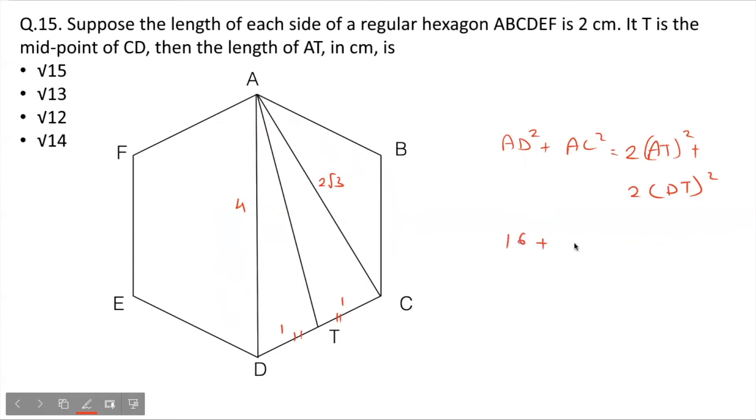AD square is basically 4 square, 16 plus AC square is 2 root 3 square is equal to twice of AT square plus 2 into DT square is 2 into 1 square, that's 2 only. So 16 plus this will be 4 into 3, 12, 28. 28 is twice of AT square plus 2. So we have 26 is twice of AT square or AT square is equal to 13. AT is equal to square root of 13. And that's your answer option 2.